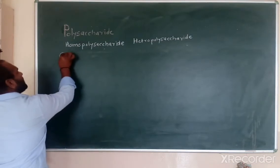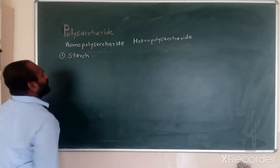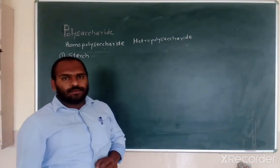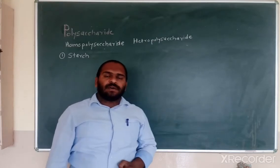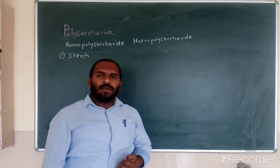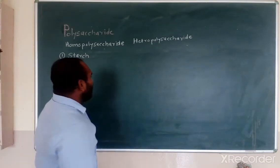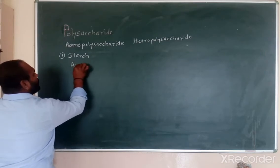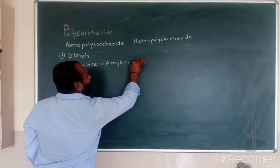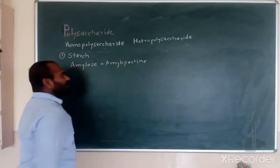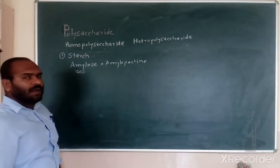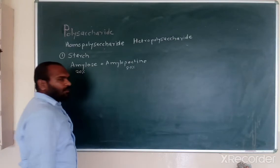In storage polysaccharides, the first example is starch. Starch is an example of both a storage polysaccharide and a homopolysaccharide. It is present in plant material and serves as energy for the plant itself in seeds, as well as energy for human beings. Starch is made up of two components: amylose and amylopectin. 20% of starch is made up of amylose, while 80% is made up of amylopectin.